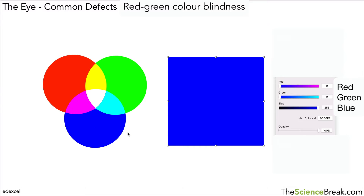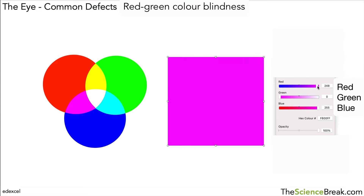So these are the colours that we're seeing. Now if we add our red to our blue we see this kind of pinky colour. This is called magenta — that's a mixture of the blue and the red.